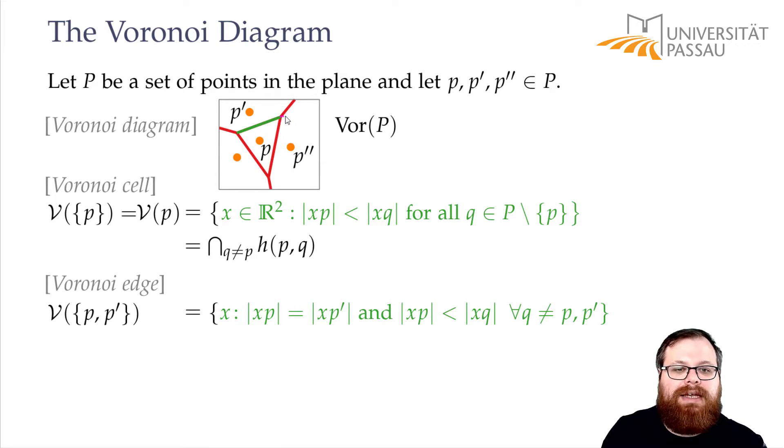So we cannot extend this to here. This point here would also have the same distance to P and P', but it actually lies in the Voronoi cell of P'' because that one is closer. So this is exactly all the points where P and P' are the two closest points of the point set, and no other one is.